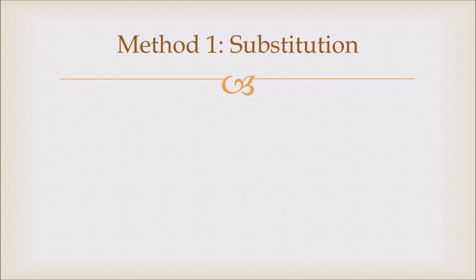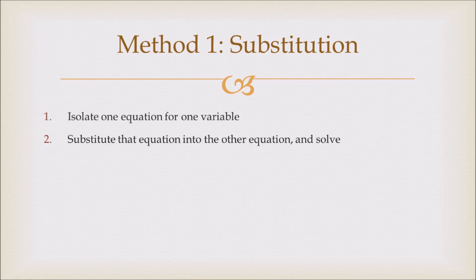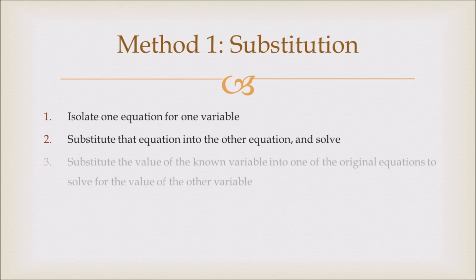Now these are the steps for the substitution method. First, isolate one equation for one variable. Then substitute that equation into the other equation and solve. Finally, substitute the value of the known variable into one of the original equations to solve for the value of the other variable.